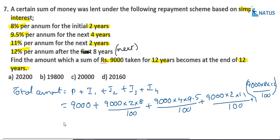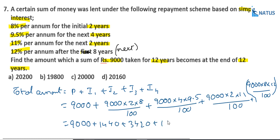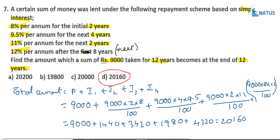Calculating: 9000 + 1440 + 3420 + 1980 + 8640 = 20160. Wait, solving: 1440 + 3420 + 1980 + 4320 = interest sum. The total amount equals 9000 + 11160 = 20160. Option D is the correct answer. This is a straightforward simple interest calculation.